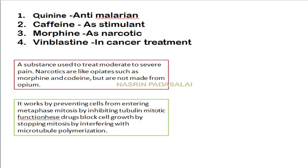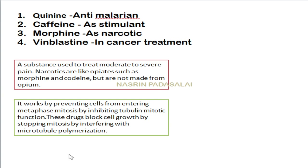A match-the-following question: quinine is an anti-malarial drug, caffeine is a stimulant, morphine is a narcotic used to treat pain. Morphine and codeine are narcotic drugs. Vinblastine is employed for cancer treatment — it prevents cells from entering metaphase of mitosis. These drugs block cell growth by stopping mitosis through interference with microtubule polymerization.